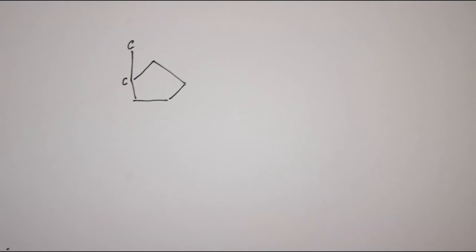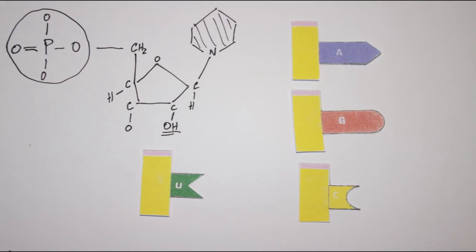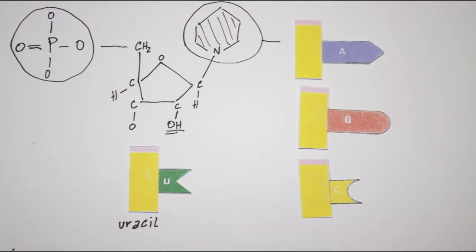As in DNA, there are four types of nucleotides, and they are just the same, with one exception. Instead of thymine, RNA has uracil.